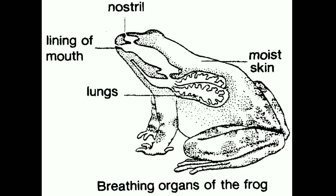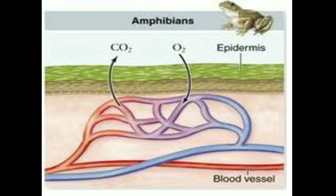First, let's talk about cutaneous respiration — respiration through skin. Frog skin has certain unique features that make it an excellent respiratory organ. Skin of frog is moist due to the presence of mucus glands, which release large amounts of mucus forming a film over the surface, helping in gaseous exchange. Skin is also thin, permeable — meaning it allows easy movement of gases — and vascular, meaning it has a rich blood supply.